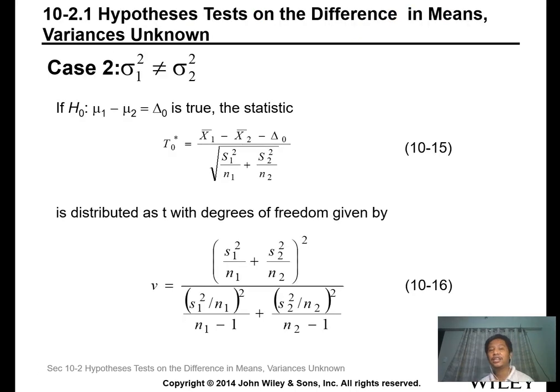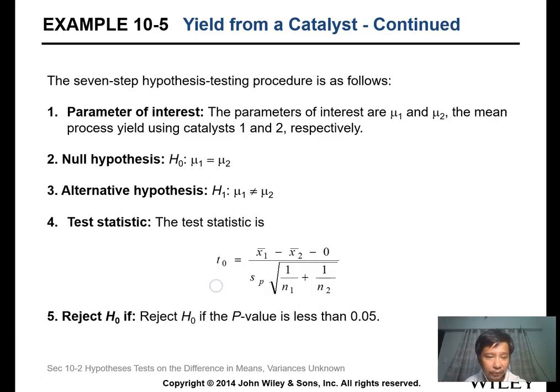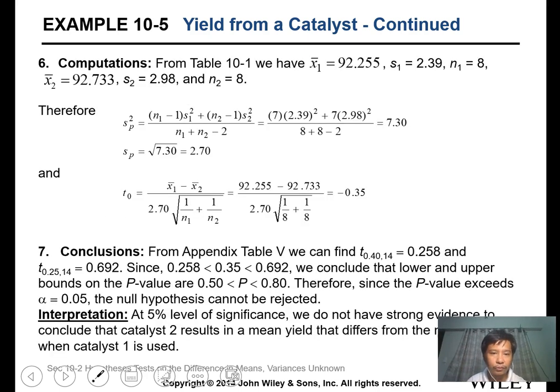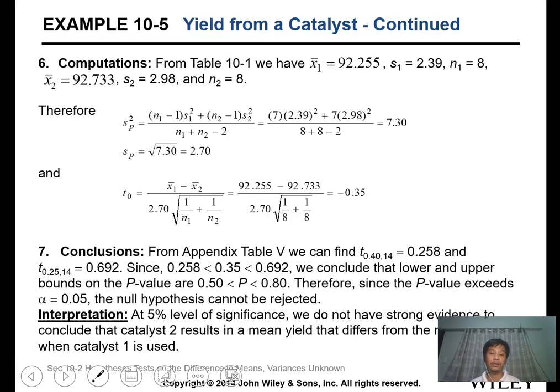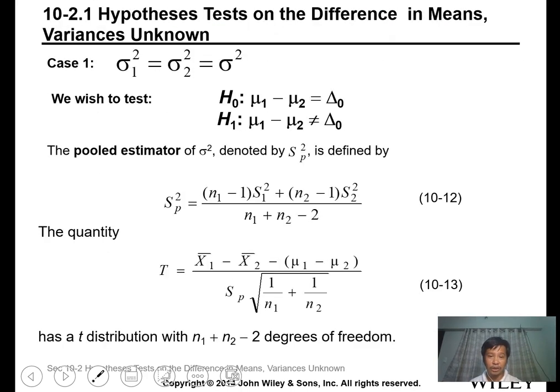For the second case, we have unknown variance but they are not the same - the variances of the populations are different. We cannot use sp, but we can use this formula to calculate the degrees of freedom using your sample statistics. The degrees of freedom is not n1 plus n2 minus 2 anymore - the degrees of freedom now is calculated with this formula.